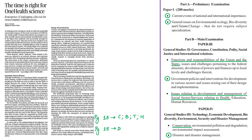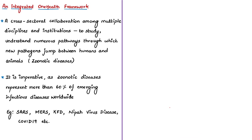The next news article refers to actions required to mitigate large-scale human suffering posed by zoonotic diseases. The 'One Health Framework' is an initiative proposed to study and understand numerous pathways through which new pathogens jump between animals and humans, causing zoonotic diseases. Experts from multiple disciplines — virology, epidemiology, genomics, ecology, veterinary sciences, animal sciences, and social and behavioral sciences — must come together to establish this cross-sectoral framework.